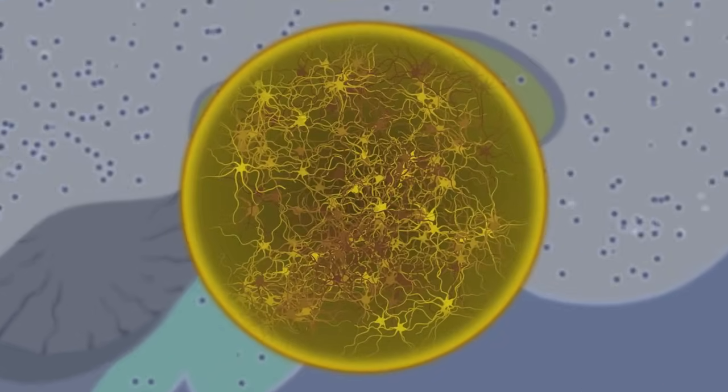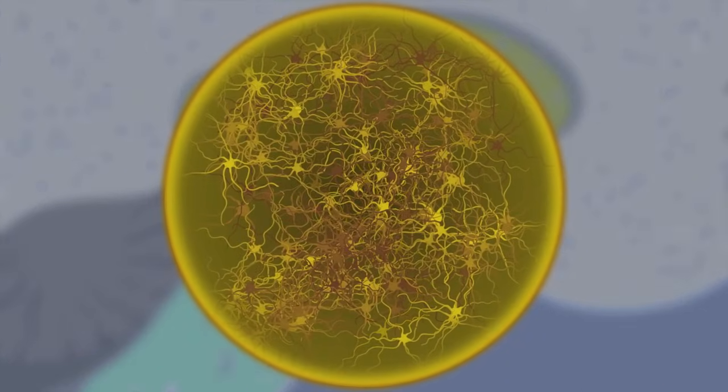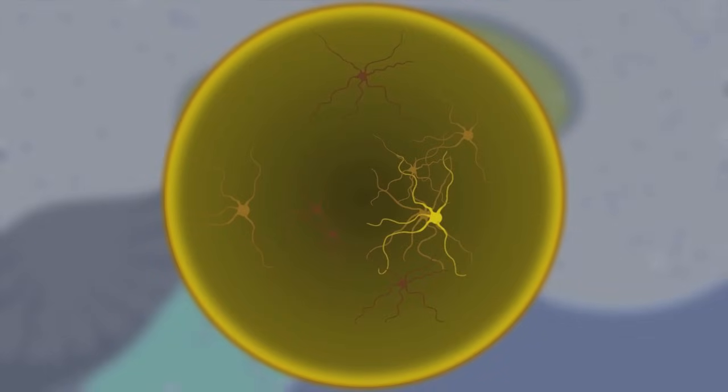In narcolepsy, those hypocretin producing cells die off. When you look closely at the brain of somebody who has narcolepsy, what you see is about a 90 to 95% loss of the hypocretin producing neurons.